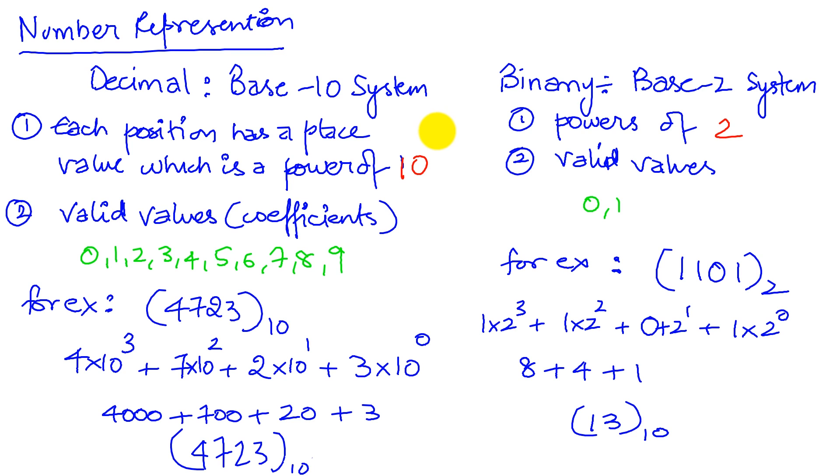For example, if I look at a base-n system where n can be either 2 or 10 in this case, then the valid values are going to be from 0, 1, 2, all the way up to n minus 1. So for example, here it's 10 minus 1 which is 9. Here it is 2 minus 1 which is 1.